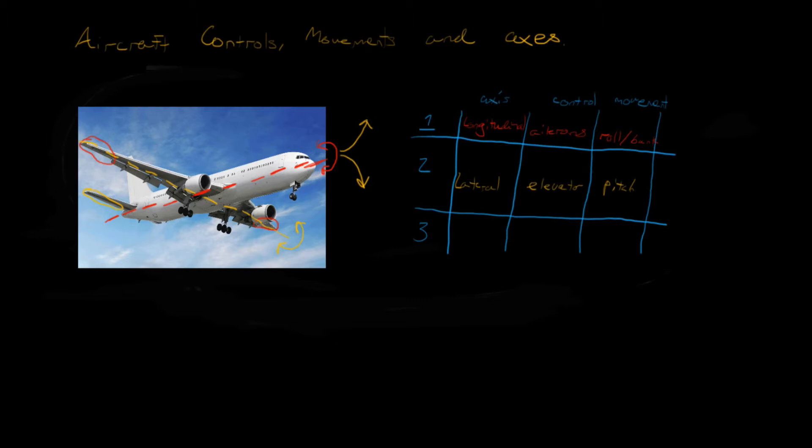The third axis that we're going to talk about is either, some people call it the normal axis, while others call it the vertical axis. Both are right. You have to imagine the normal axis, or the vertical axis, is going vertically straight through the plane.